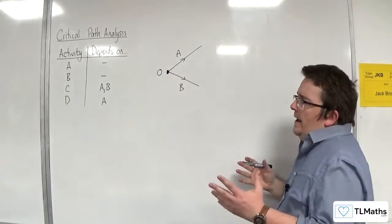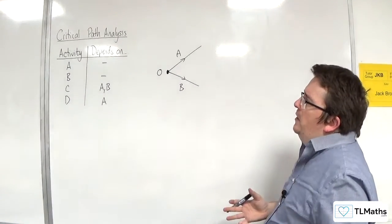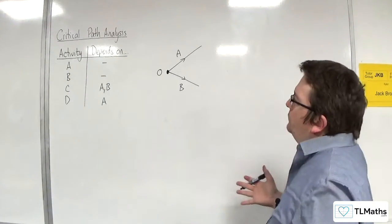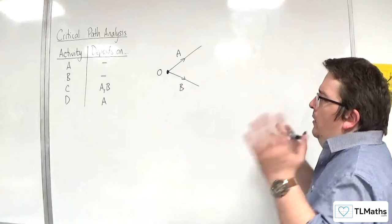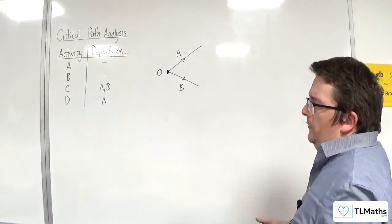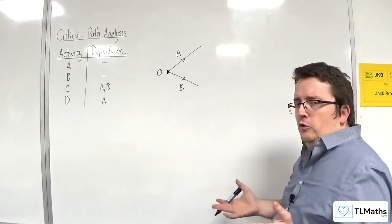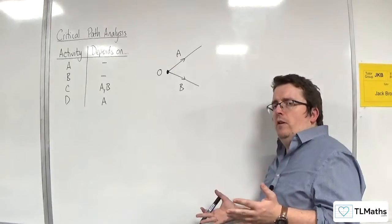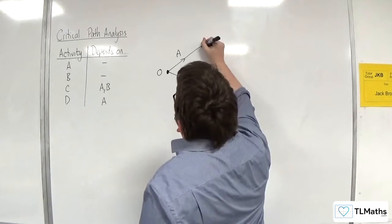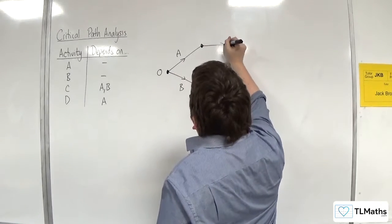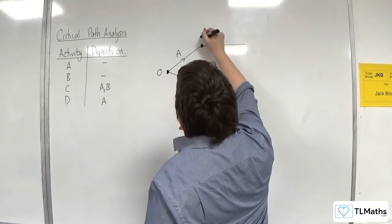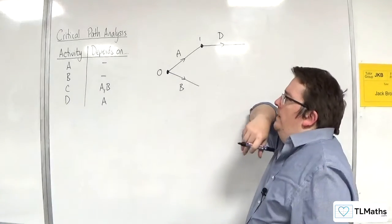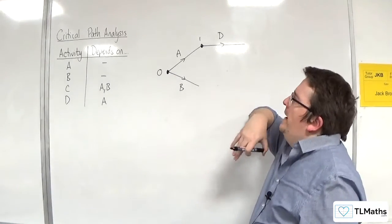We then have that activity C relies on both A and B. So instead of drawing that first, what I'll do is I'll draw activity D first. So activity D relies on just A. So I'll label that one. Now, activity C relies on both A and B.